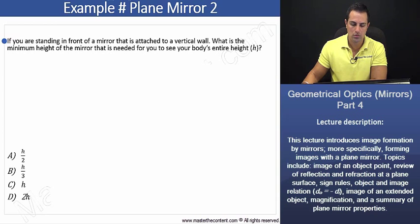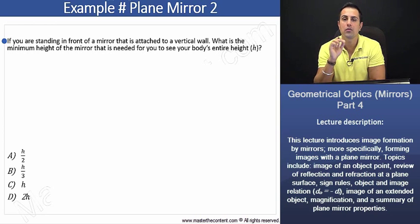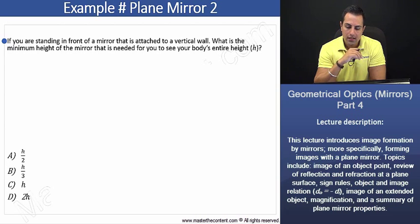Example, plane mirror two. Well, once again, begin by reading our problem here. If you are standing in front of a mirror that is attached to a vertical wall, what is the minimum height of the mirror that is needed for you to see your body's entire height?